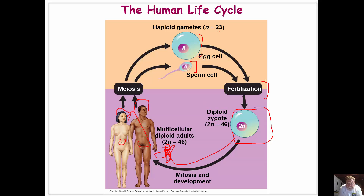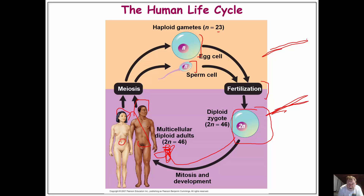The life cycle is a little bit different. We're going to be covering life cycles quite a bit, and this is what we call alternation of generations. This is the haploid generation; this is the diploid generation. In animals, the vast majority of the life cycle is spent in the diploid condition, and a relatively small amount — sometimes just hours — is spent in the haploid condition.